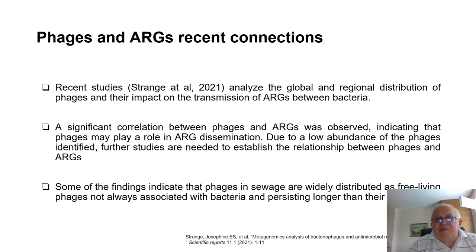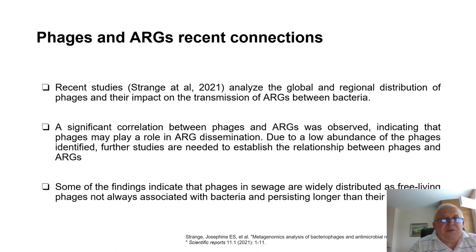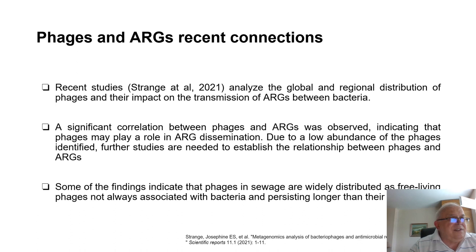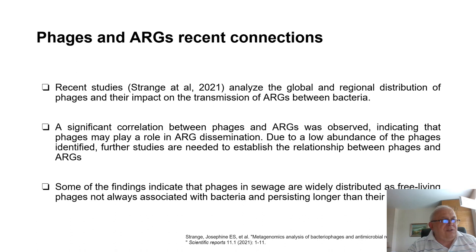A few words about phages and antimicrobial resistance genes — recent connections. Recent studies, such as the study of Stang and co-authors published in 2021, analyzed the global and regional distribution of phages and their impact on the transformation of antimicrobial resistant genes between bacteria from samples collected from sewage waters. These studies show high correlation between phages and antimicrobial resistant genes, and also that some phages do not depend on their host bacteria. We also observe such correlations in our analysis, and the Bayesian analysis supports their second observations. Our results confirm to a large extent the results of that paper.